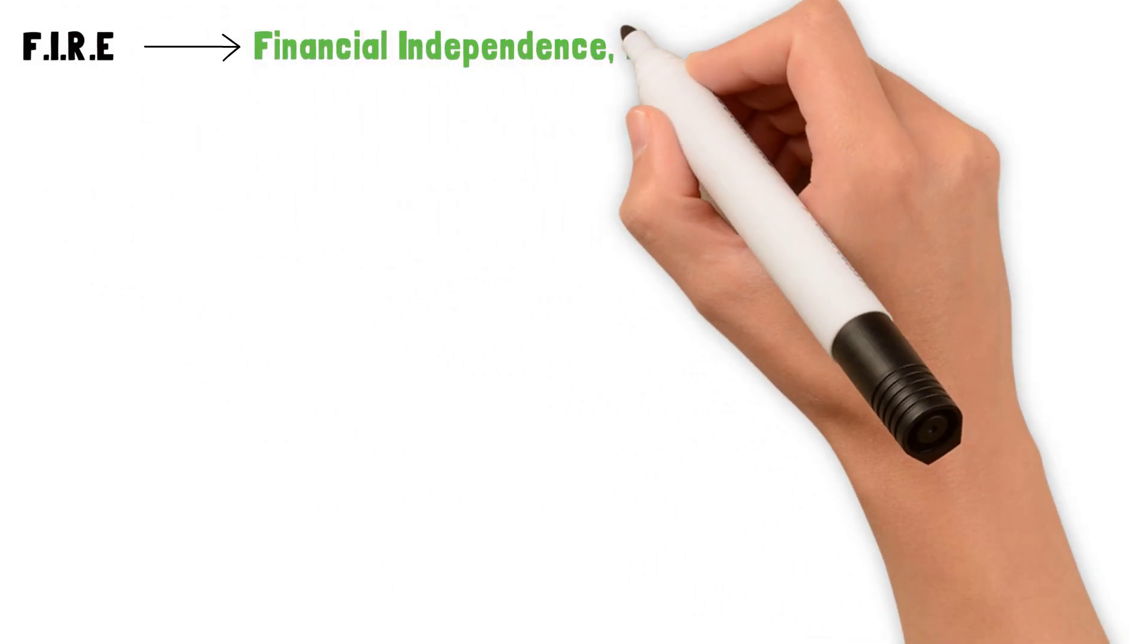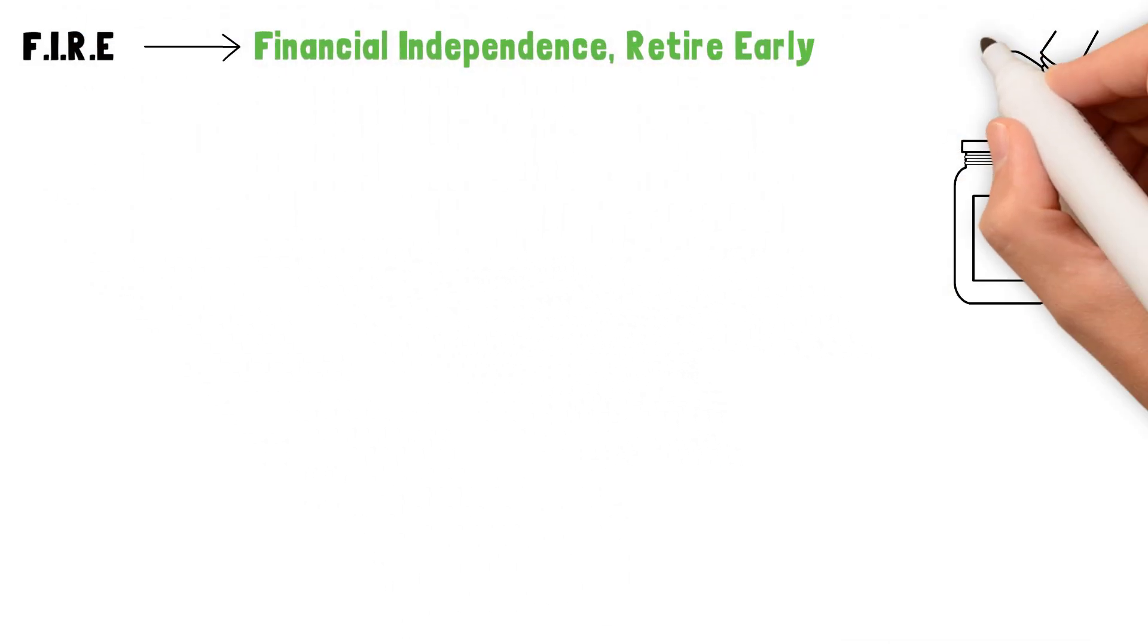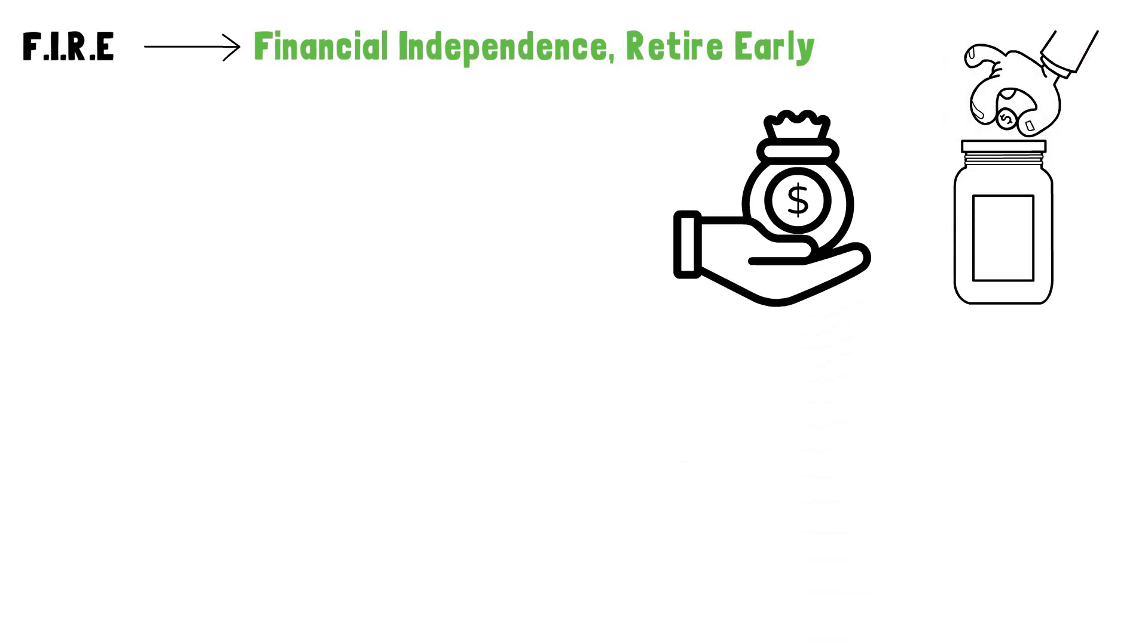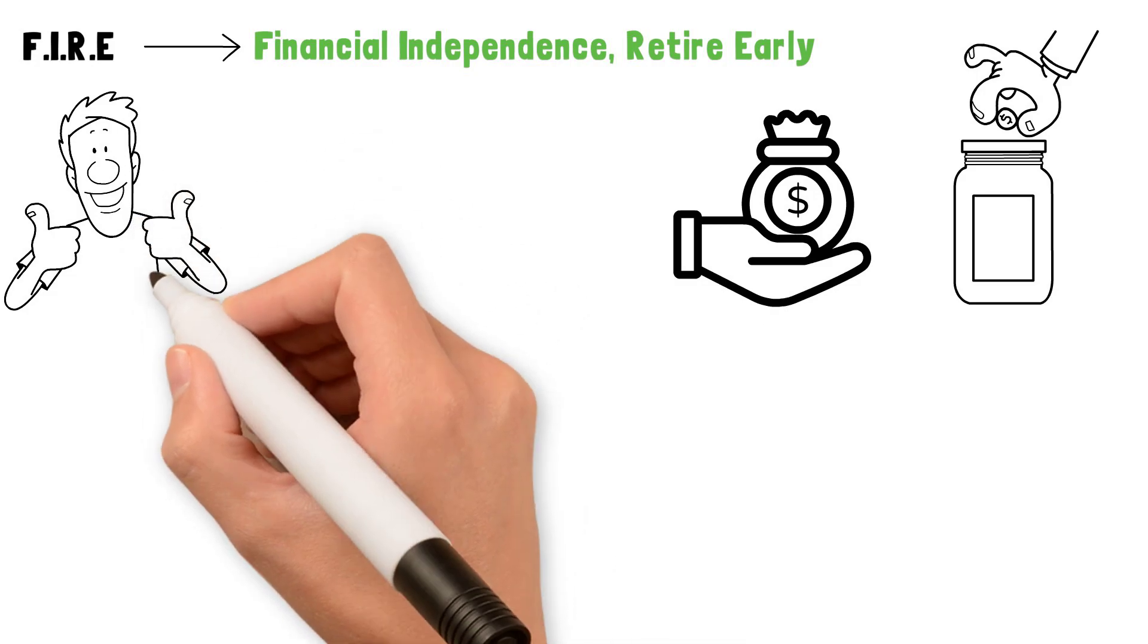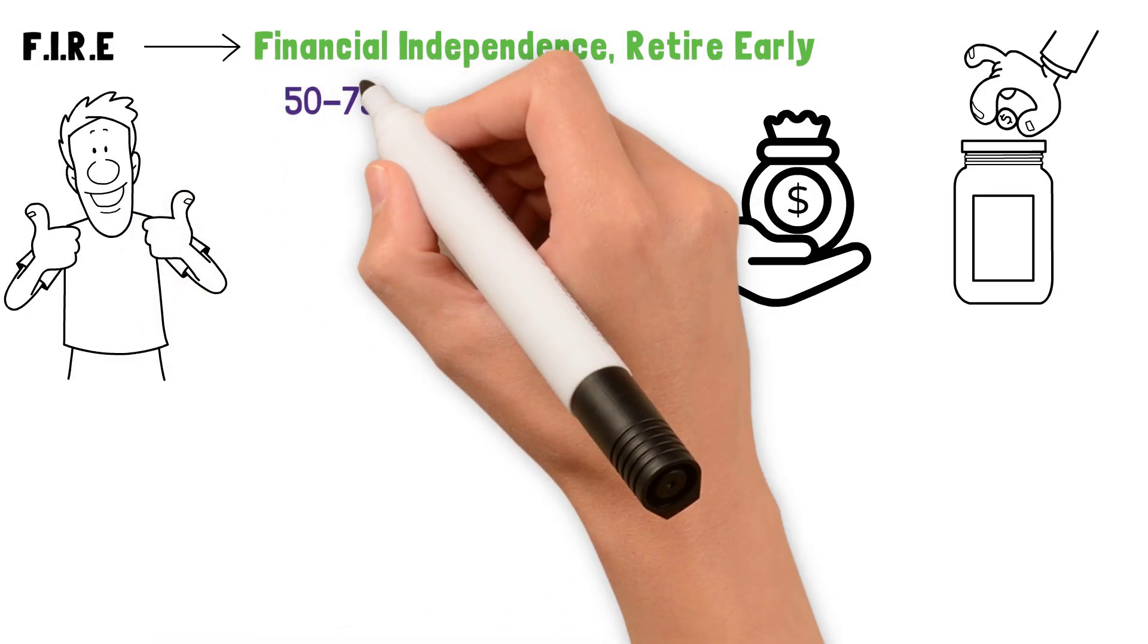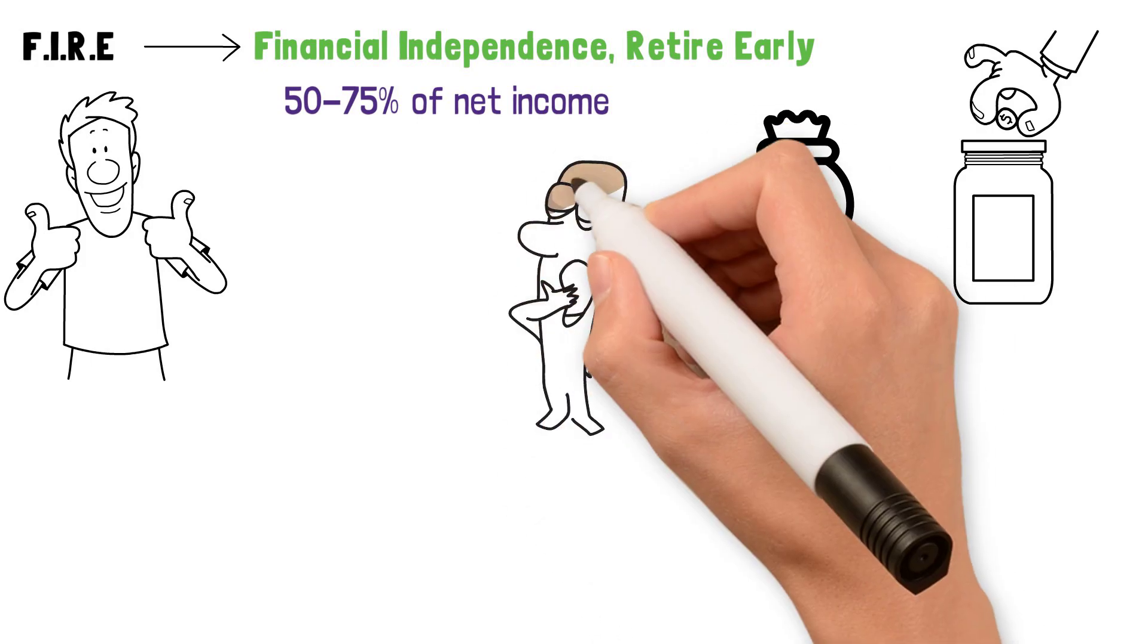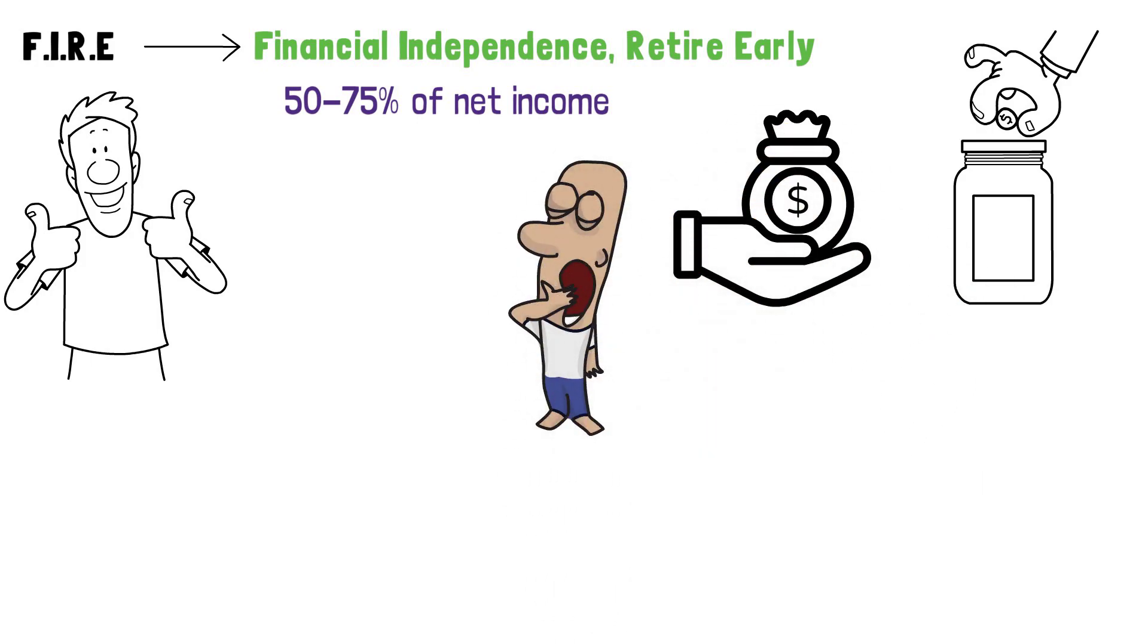What exactly is FIRE? FIRE simply stands for Financial Independence Retire Early. The objective of this strategy is for you to save and invest as much as you can as early in your working years as possible, saving and investing 50% to 75% of your net income so you can afford to retire earlier, generally within your 30s and 40s.